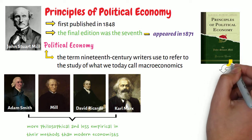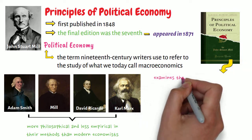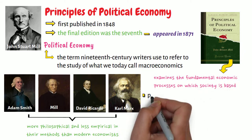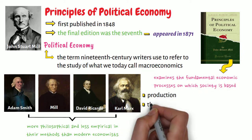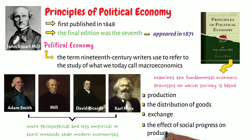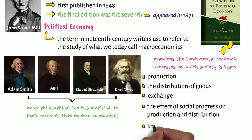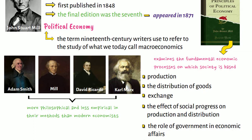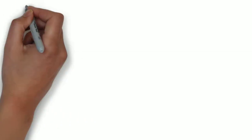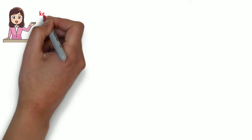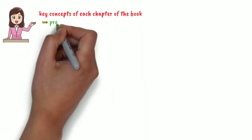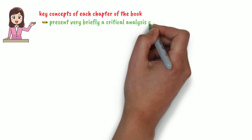In this book, Mill examines the fundamental economic processes on which society is based: production, the distribution of goods, exchange, the effect of social progress on production and distribution, and the role of government in economic affairs. In what follows, I will briefly sketch the key concepts of each chapter of the book, and then present very briefly a critical analysis of the entire book.